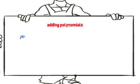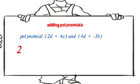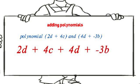Example, we want to add the polynomial 2d plus 4c, and 4d plus negative 3b. The first step is to open the parentheses and write the polynomial together. And since they are adding, the terms in the second parentheses remain the same. We will learn more in the next lesson.